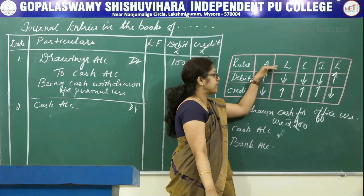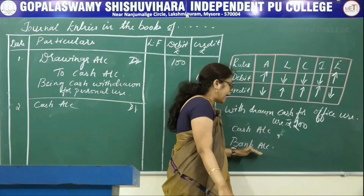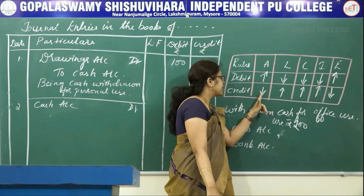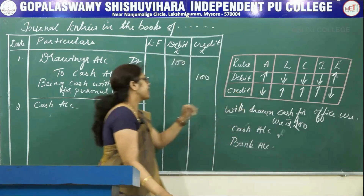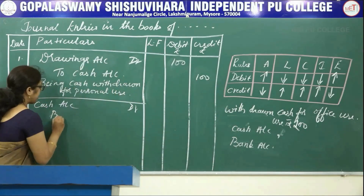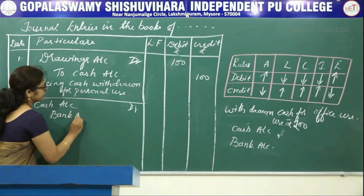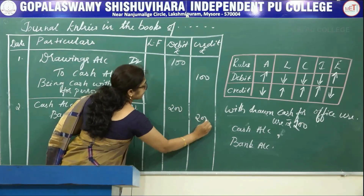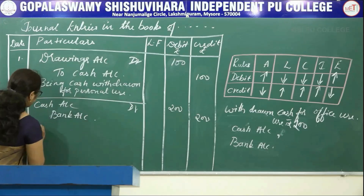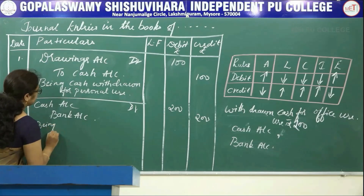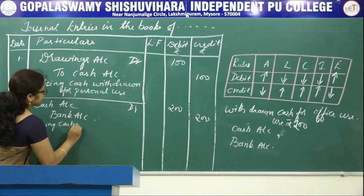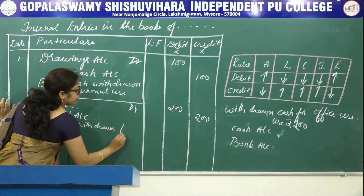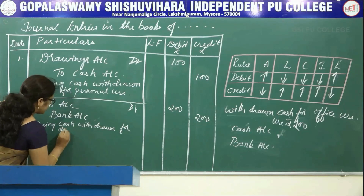Bank also comes under asset. The bank amount reduces, that means asset reduces. Reduces means it has to be credited. Then credit the bank account amounted to rupees 200, being cash withdrawn for office use.